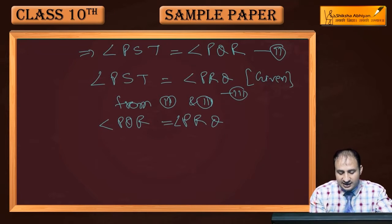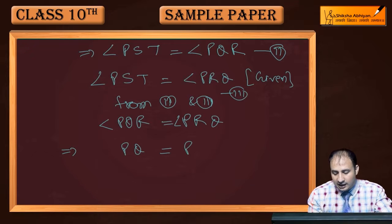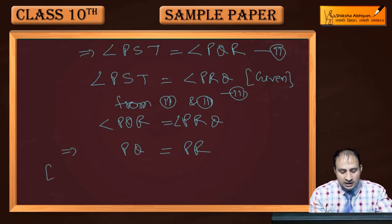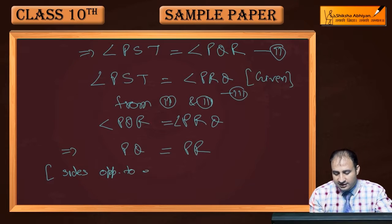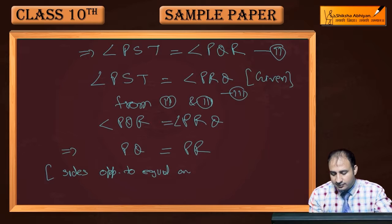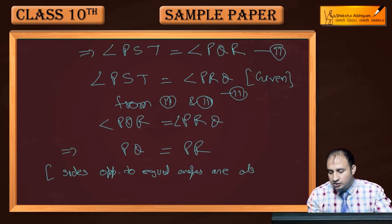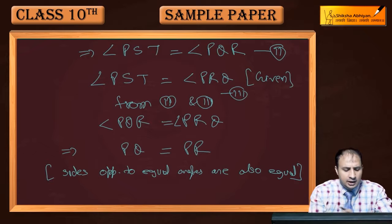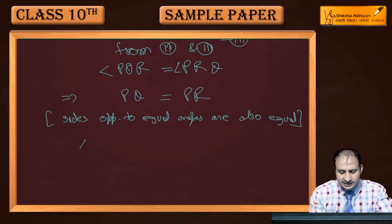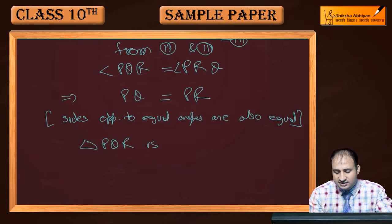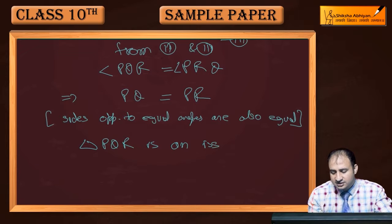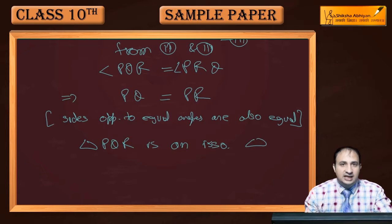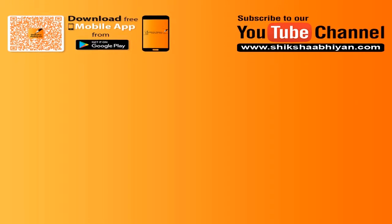Why? Because sides opposite to equal angles are also equal. Now when PQ is equal to PR, two sides of the triangle are equal to each other. Therefore I can say that triangle PQR is an isosceles triangle.